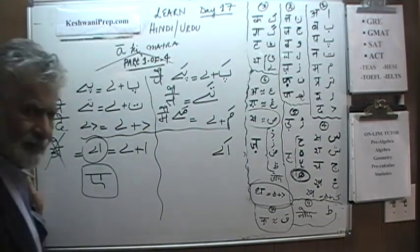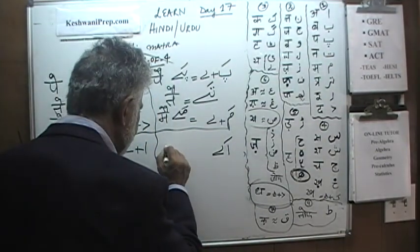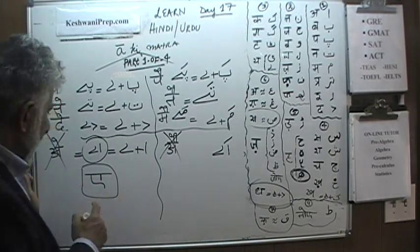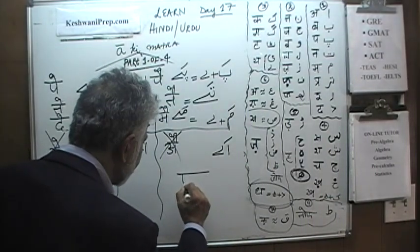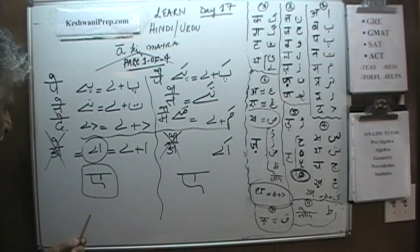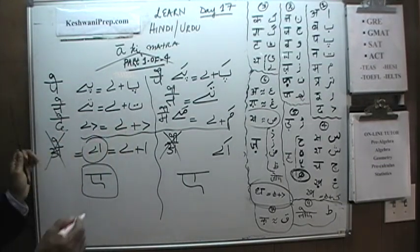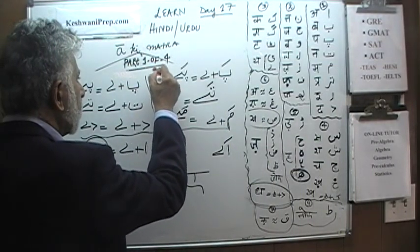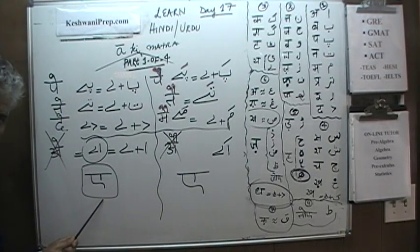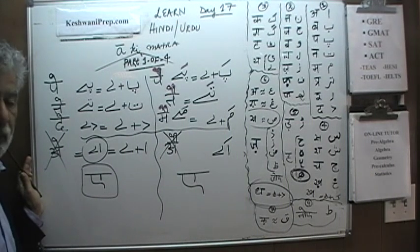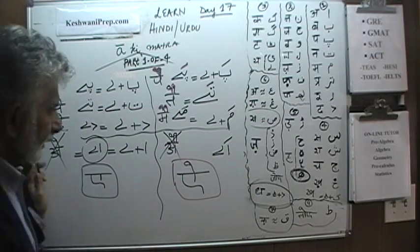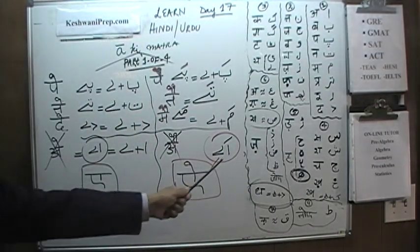For Urdu with Badi Ye ki Matra, you put a Zabar on it — it follows the same pattern. But in Hindi, you cannot take A and put two marks on it. The long A has a unique letter. Now here's the tricky part: because this letter itself is called A, to convert A into a longer A sound, you only put one more — it does not take two. So in Hindi: Aleph, Badi Ye with a Zabar — and that's it.